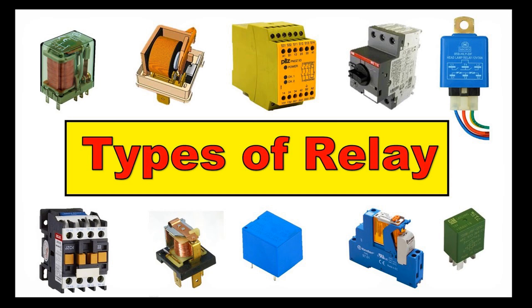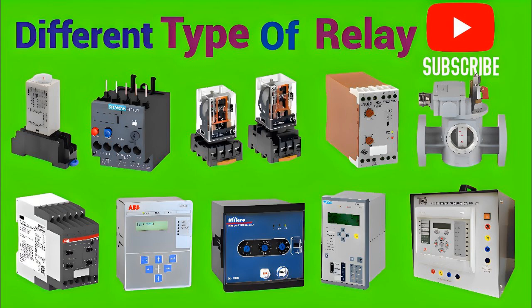The overcurrent relay is a foundational element in power system protection. Its ability to isolate faulted sections quickly and selectively helps prevent equipment damage and maintain overall system stability. With various types and settings, overcurrent relays offer flexible and reliable protection for numerous applications across the power industry. Each relay type has distinct characteristics suited to specific applications, ranging from high-speed switching to precise fault detection, ensuring optimal performance and protection across various electrical systems. See you guys!